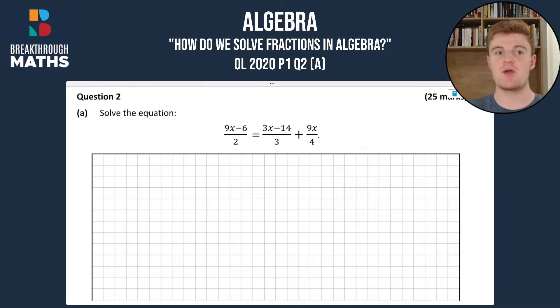So in this question, simply we're asked to solve the equation: 9x minus 6 over 2 equals 3x minus 14 over 3 plus 9x over 4.